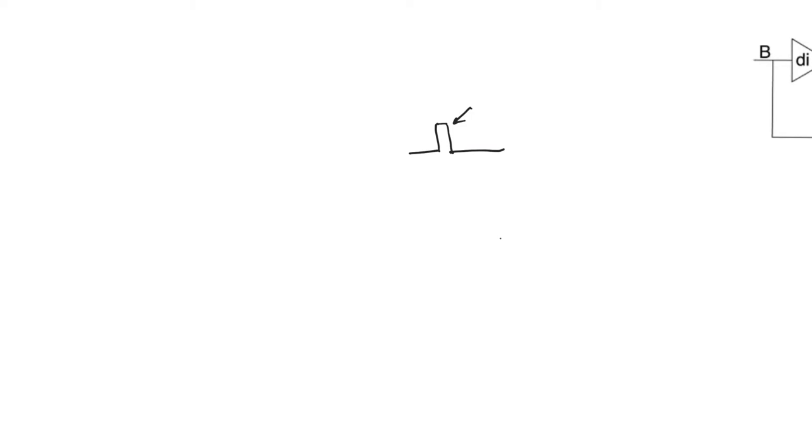In the next few videos I will be discussing an issue that at first will seem very detrimental to all our circuits, but then we'll talk about how to mitigate it and how it may not be as serious as it seems at first. This issue is the issue of glitching — specifically the fact that at the output of combinational logic we sometimes see glitches appearing. We want to understand where the glitches come from, how we can address them, how we can remove them, and whether we even need to remove them.